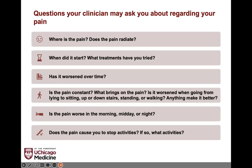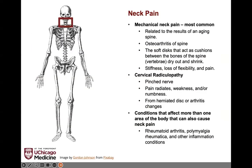Knowing what activities have been limited is part of the diagnostic process, but also helps start building treatment goals — a list of things you might want to get back to. For the next several slides, we're going to go through different areas of the body where osteoarthritis tends to occur. We'll start from the top with neck pain.